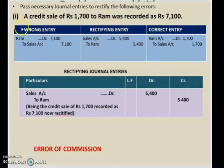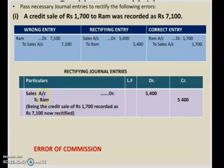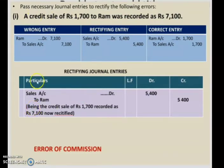After preparing this working note box, you have to pass a rectifying journal entry separately. Prepare a journal entry in which the rectifying entry is recorded as is: sales account debited to RAM account with 5400. The narration to write: 'Being the credit sale of rupees 1700 recorded as rupees 7100, now rectified.' Copy the question as it is after writing 'being', and include 'now rectified' at the end.